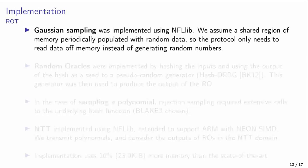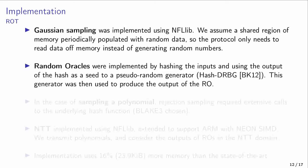We'll now address the implementation details. As stated before, we implemented our novel protocol in C++, resorting to external libraries for some specific operations. First, Gaussian sampling was implemented using NFLD. We assumed there was a shared region of memory that was periodically populated with random data, so the protocol only needed to read data from memory instead of generating random numbers on the fly. Then, random oracles were implemented by hashing the inputs and using the output of the hash as a seed to a pseudorandom generator. This generator was then used to produce the output of the random oracle.